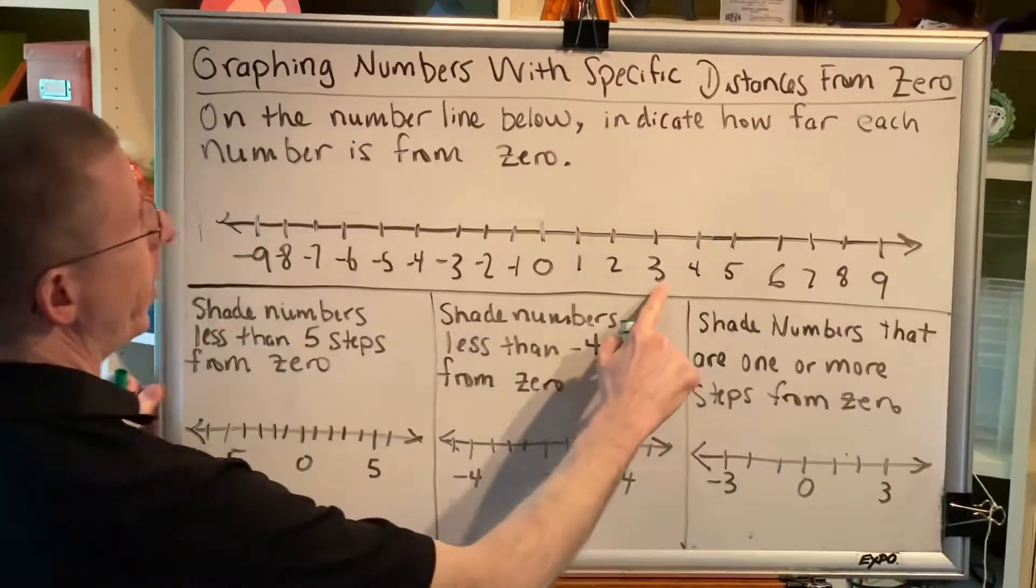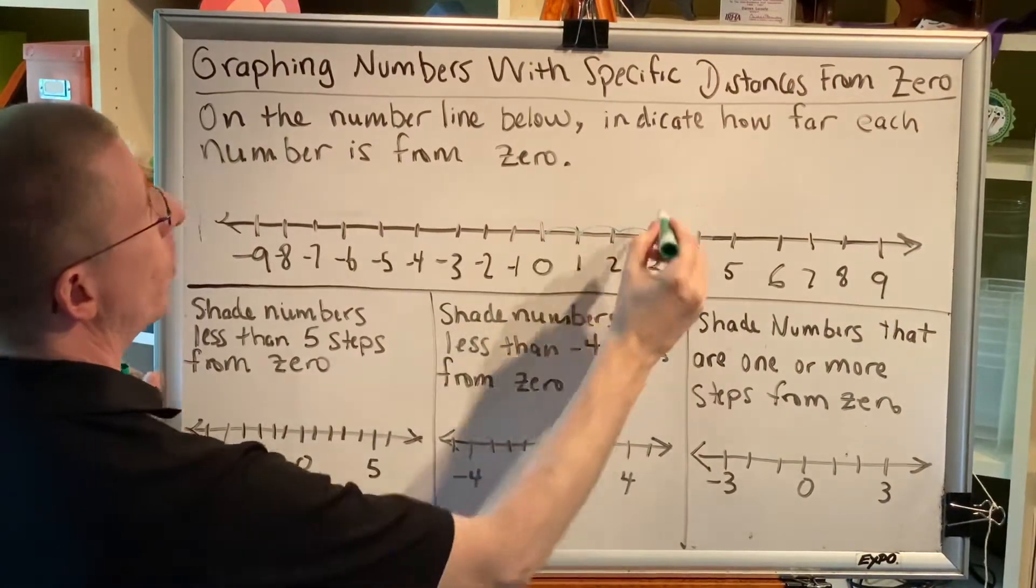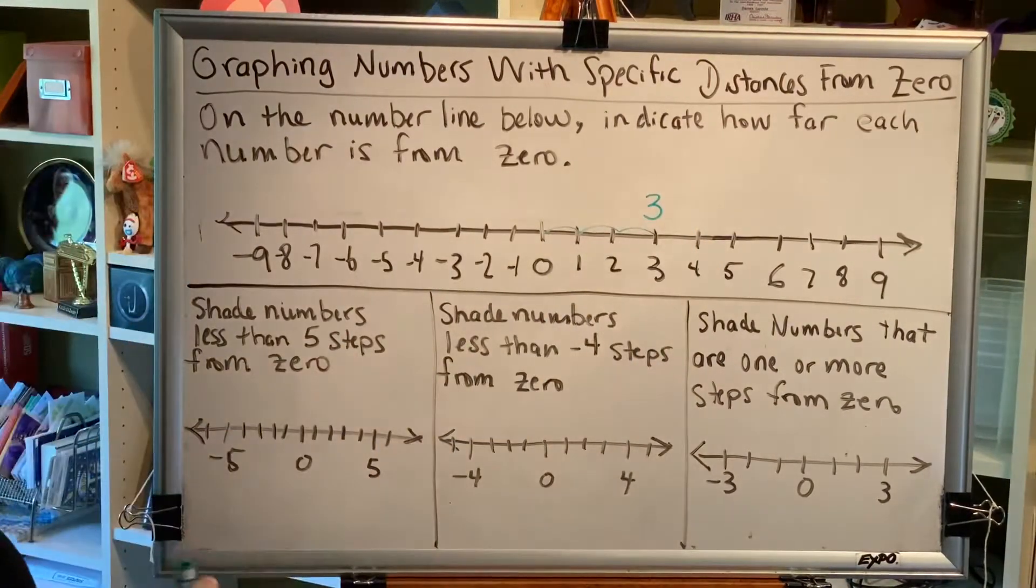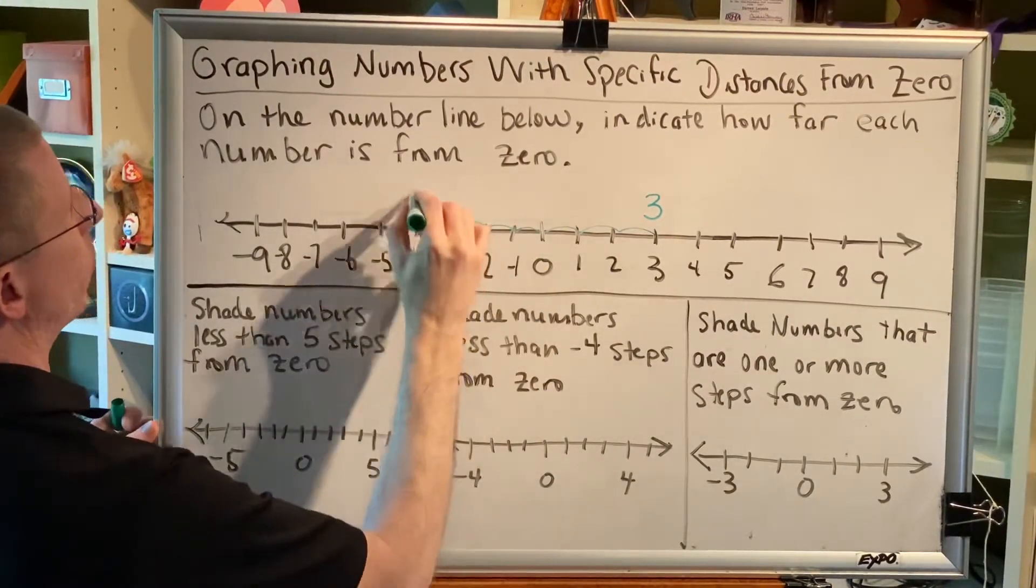How far is 3 from zero? Well, it's 1, 2, 3 steps away. How far is negative 4 from zero? Well, it's 4 steps away.